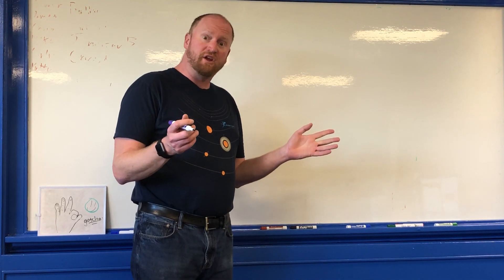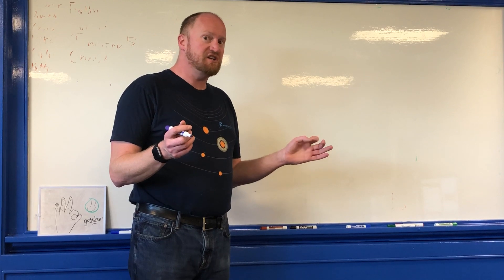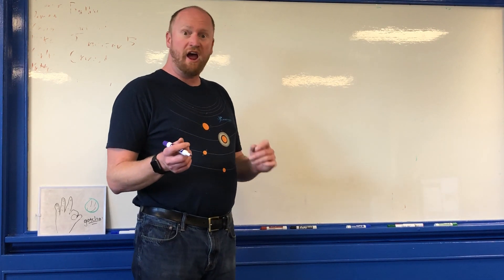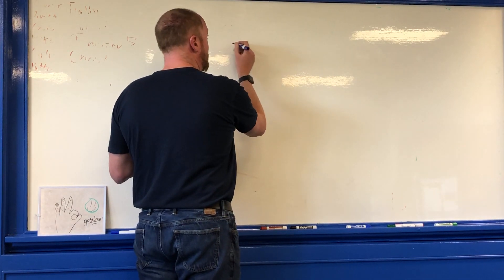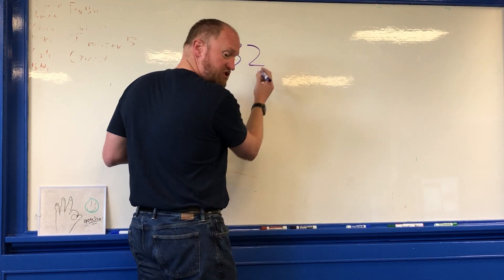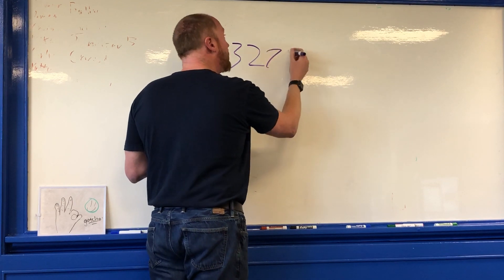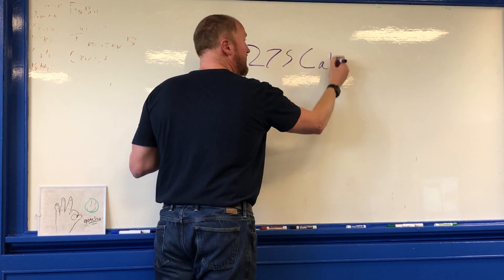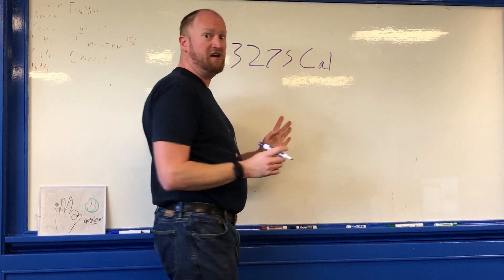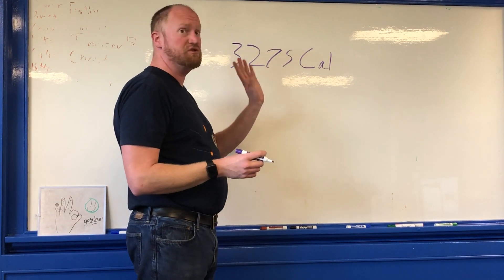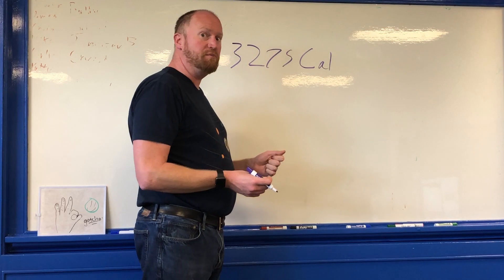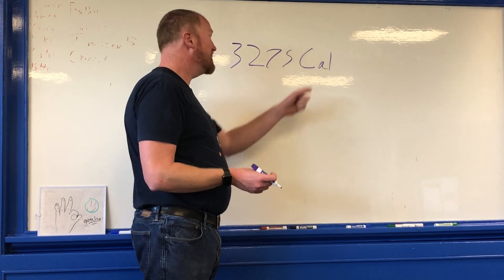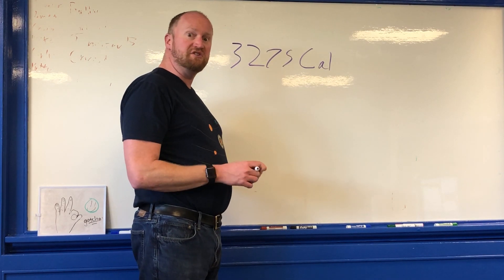Now you can go on many websites and they will help you calculate how many calories you should consume a day. When I did this I got a number 3,275 calories. These are big calories that I should consume every day. Big calories also known as kilocalories if you're in Europe or other places where they use kilocalories, but in the US we refer to them as dietary calories.